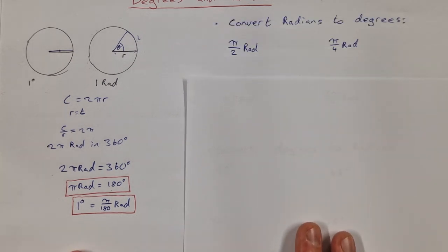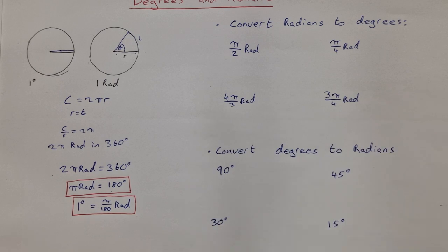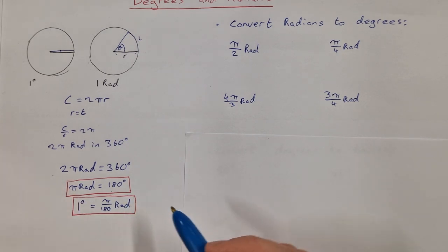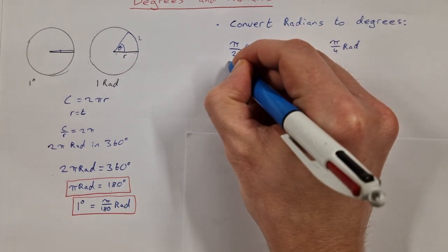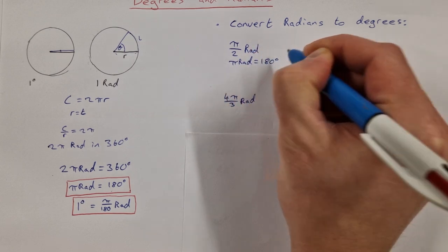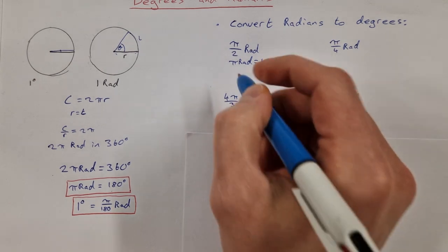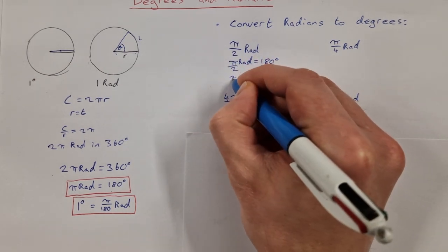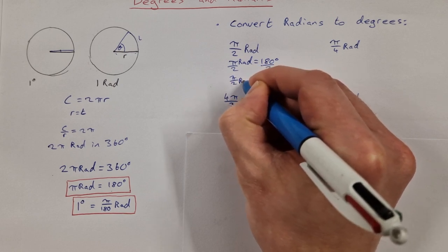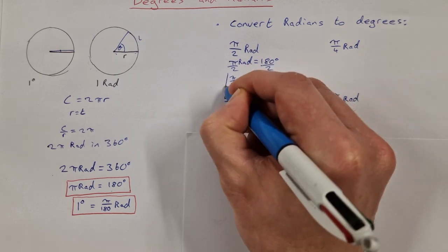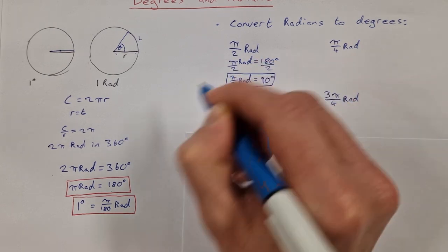Let's convert from radians to degrees. First, π/2 radians. Starting with π radians equals 180 degrees, I want π/2 so I divide both sides by 2. That gives π/2 radians equals 180 divided by 2, which is 90 degrees. So π/2 radians is 90 degrees.